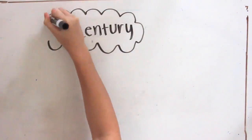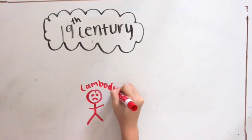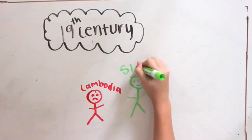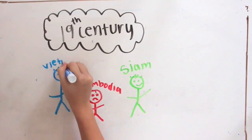In the 19th century, Cambodia was under threat from the Siam, which is modern-day Thailand, and the Vietnamese. This greatly weakened their kingdom.